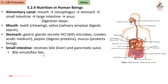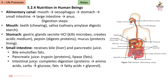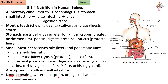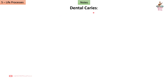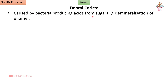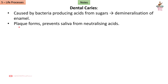Bile emulsifies fats. Pancreatic juice contains trypsin for proteins and lipase for fats. Intestinal juice completes digestion — proteins to amino acids, carbohydrates to glucose, fats to fatty acids and glycerol. Absorption occurs via villi in the small intestine. The large intestine handles water absorption, and undigested waste is removed via the anus.